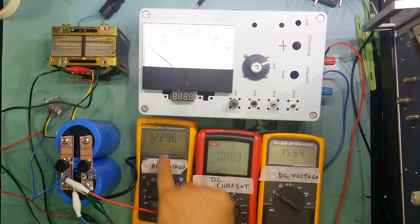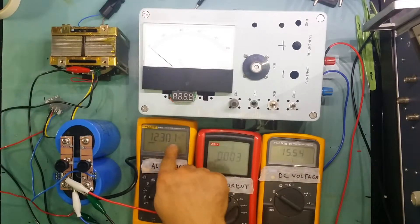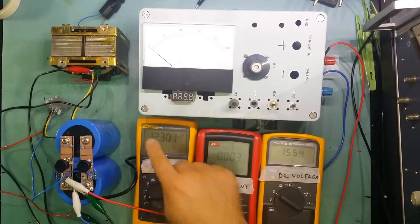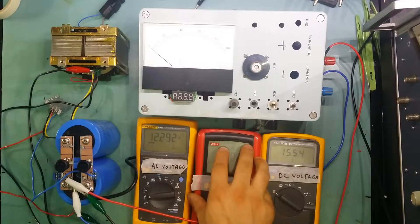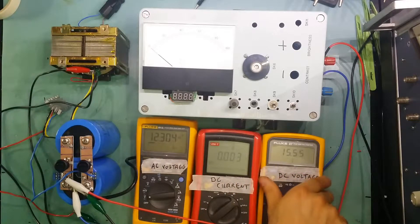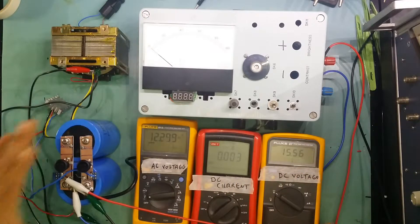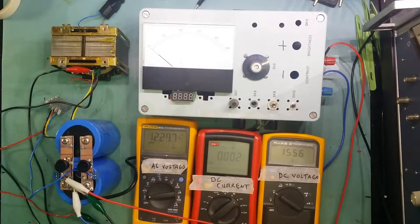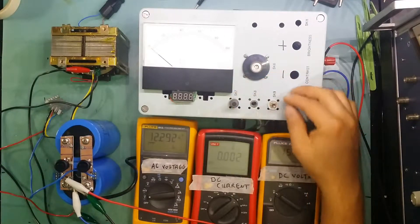So here I've got the AC side without rectifying anything straight from the transformer. I'm getting 12.3 volts. This meter is going to measure the DC current when I start pulling, and this is the DC voltage after rectification and smoothing capacitors.